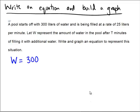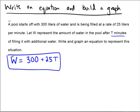It's being filled, and how fast is it being filled? How much are you adding in? Well, you're adding in 25 liters, but that's per minute. And how many minutes is it running for? Well, that's given as t. So w equals 300 plus 25t is the equation that represents this situation.